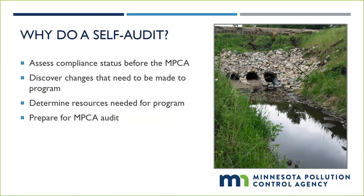You may also discover changes that need to be made to your program. The self-audit will give you a high-level view of your program as well as an understanding of how smoothly day-to-day activities are running. This may bring to light ways to make the program more efficient or ways to restructure your program to bring it into compliance. Part of the self-audit is evaluating who is involved in your program and in what capacities, which may help you determine the number of staff or financial resources needed to maintain a fully compliant stormwater program.